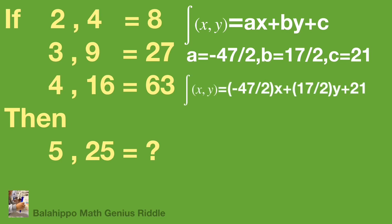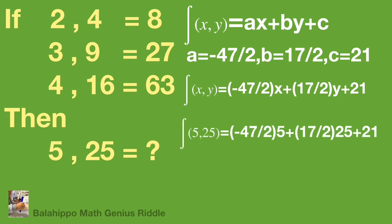It becomes f(x, y) = (-47/2)x + (17/2)y + 21. So, inputting 5 and 25 on the left-hand side, the equation is f(5, 25) = (-47/2)(5) + (17/2)(25) + 21.